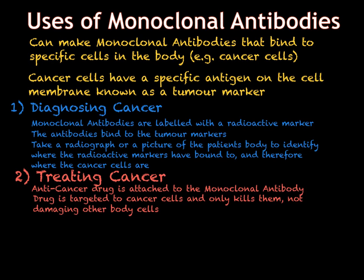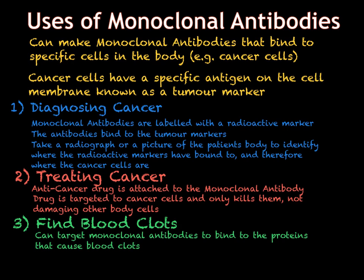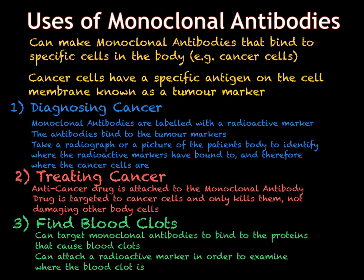We can also use monoclonal antibodies to find blood clots. A blood clot is where proteins in the blood join together and form a solid lump. Monoclonal antibodies have been developed that bind specifically to these proteins. Like with cancer, we can attach a radioactive element to these antibodies and take a radiograph — any bright spots identify where a blood clot is found. This is very useful because you can easily locate a potentially harmful blood clot and then carry out procedures to remove it.